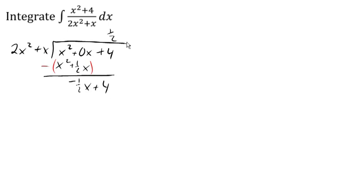At this point we've reduced it. So now we've got 1 half as the whole part, plus negative 1 half x plus 4 over 2x squared plus x.